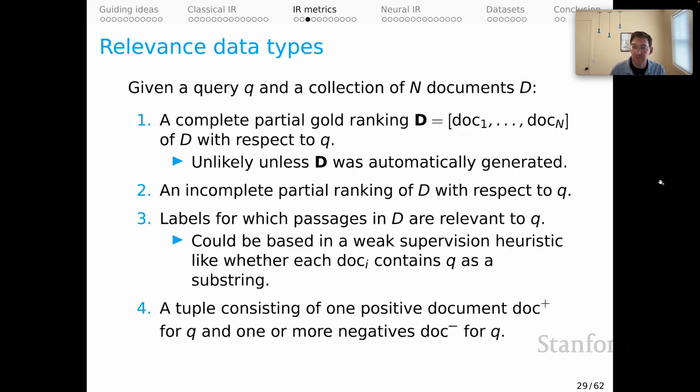And then maybe the most relevant data type for us as we think about neural IR systems in particular is the one given in item 4. Here we have a tuple consisting of one positive document for our query and one or more negative documents for our query. That can be a device for both training IR systems and for evaluating them.